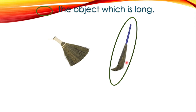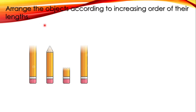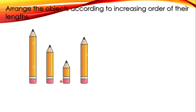Now here's another question: arrange the objects according to increasing order of their lengths. Here you can see four pencils of different lengths. We have to arrange these pencils from smaller to bigger. First, we select the smallest one — this is our smallest pencil.